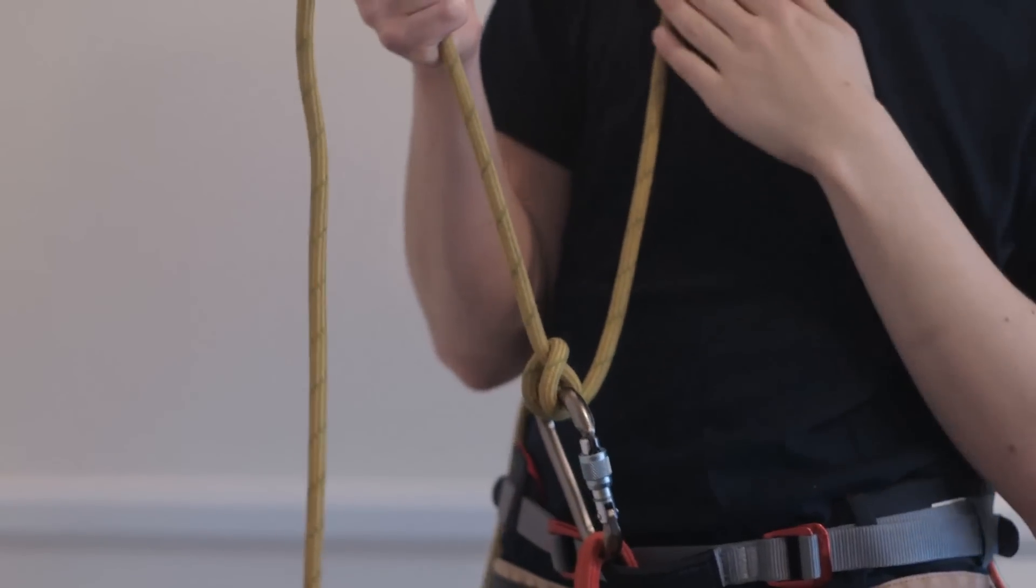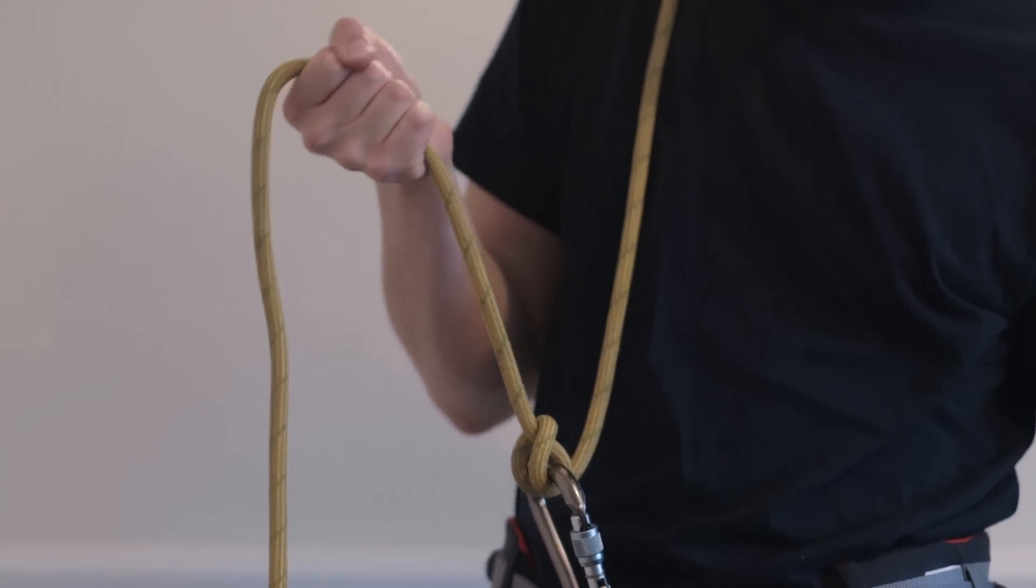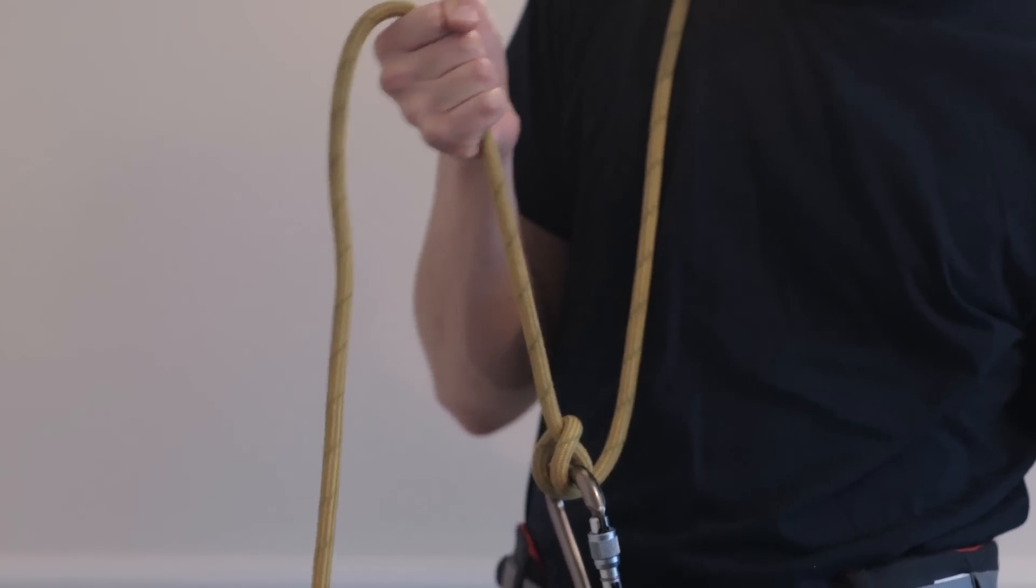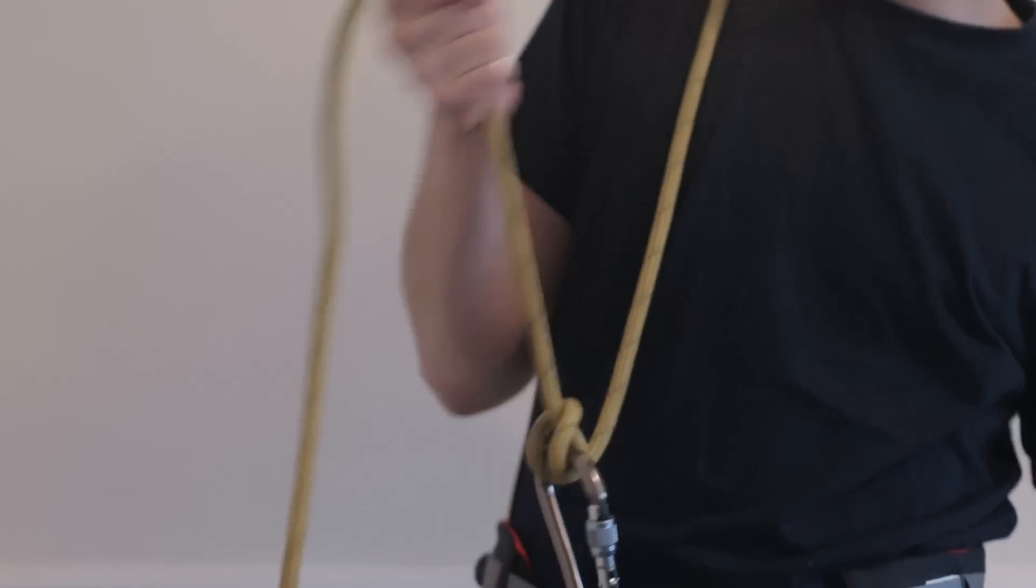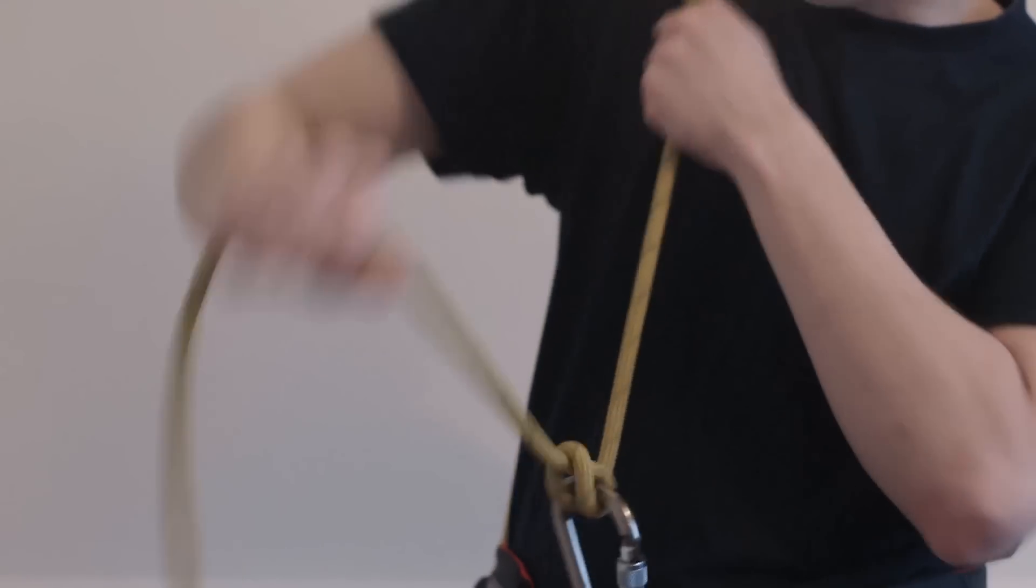So it's slightly awkward. I mean, if you have the strength and the confidence to do it, I would probably catch a top rope climber like this, with the brake hand up, as opposed to down like this as if you were using a regular ATC.